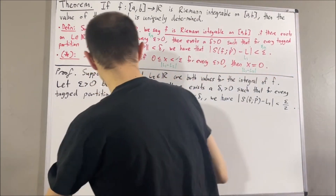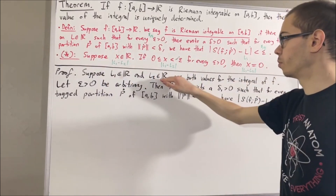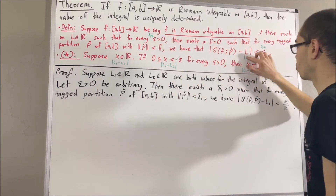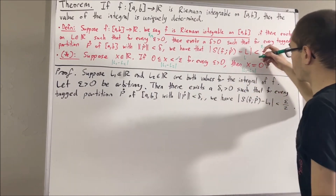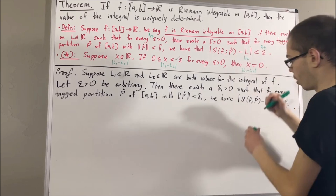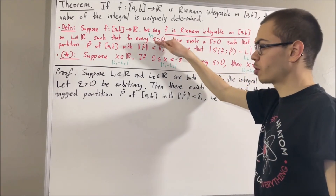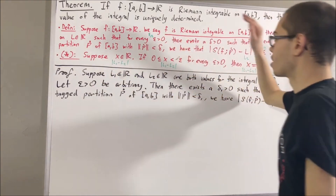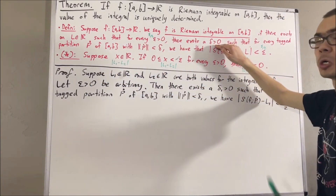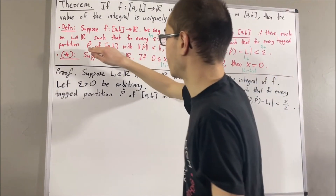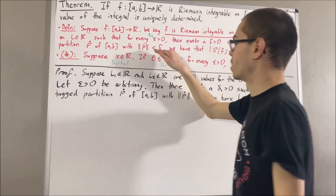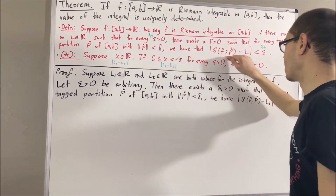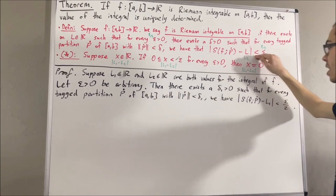Similarly, since L2 is also a value for the integral of f, the same statement holds with L replaced by L2. Applying it with ε/2, there exists a positive real number δ2 such that for every tagged partition P of [a, b] whose norm is less than δ2, we have that |S(f, P) − L2| < ε/2.